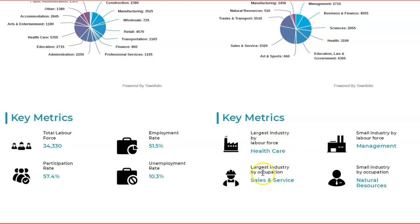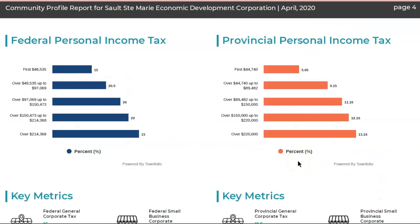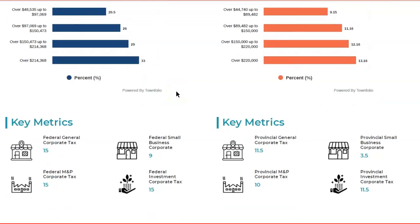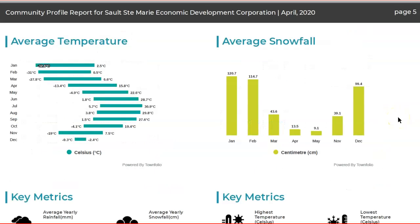There are also some opportunities in smaller industries like management and natural resources. When it comes to income tax, it's not very different from other communities in Ontario. The key metrics show the provincial general corporate tax is 11.5 percent, the provincial small business corporate tax is 3.5 percent, and for federal taxes, the small business corporate rate is 9 percent and the investment corporate tax is 15 percent.